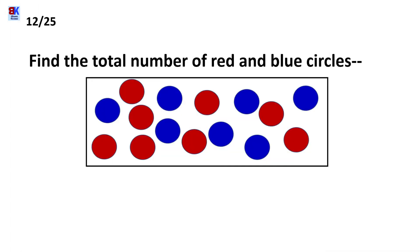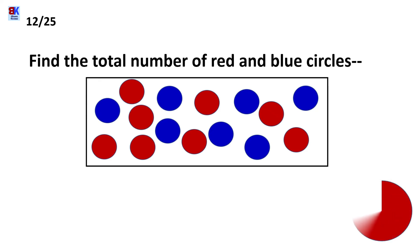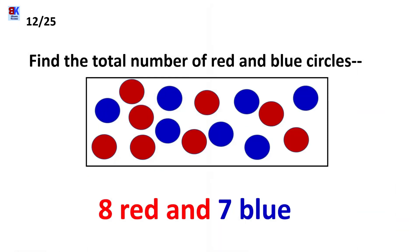Twelfth question is: find the total number of red and blue circles. The answer is 8 red and 7 blue circles. This was very easy — the only thing you had to do was a quick count.